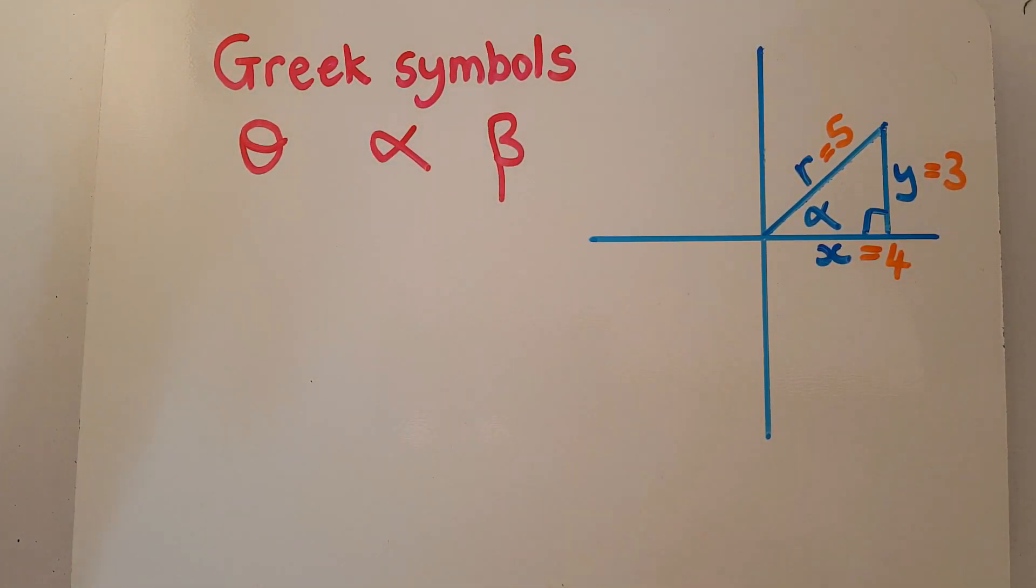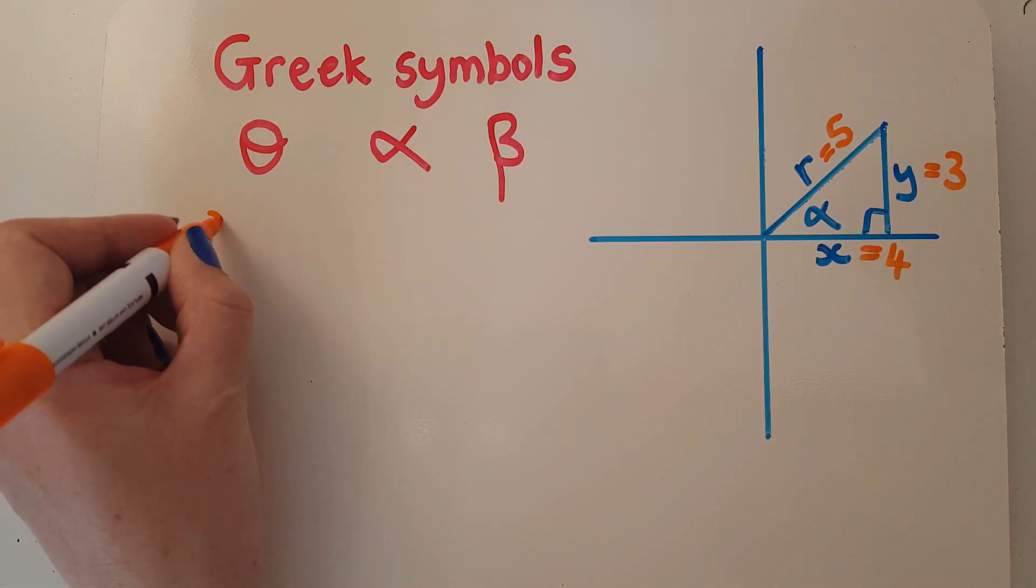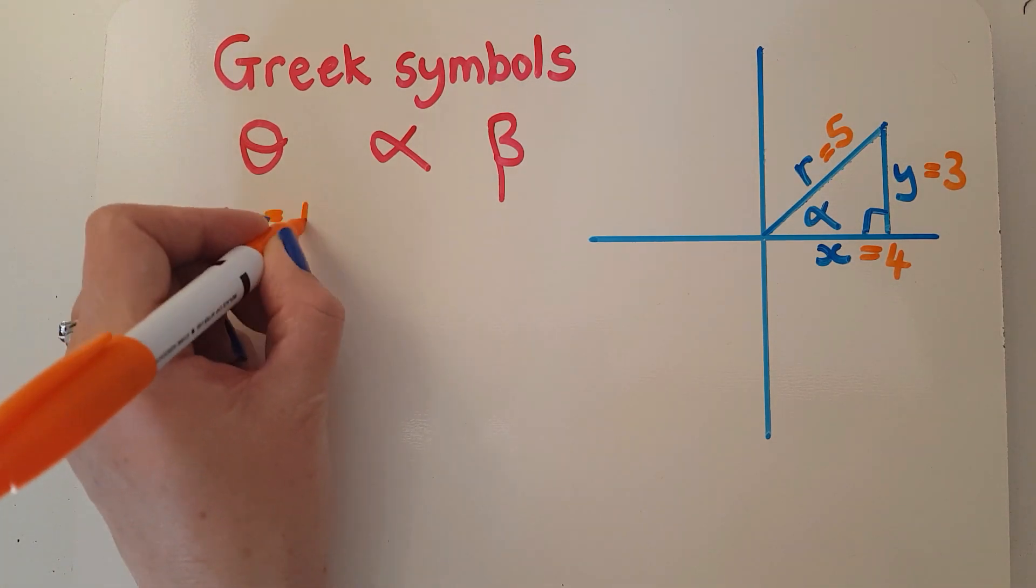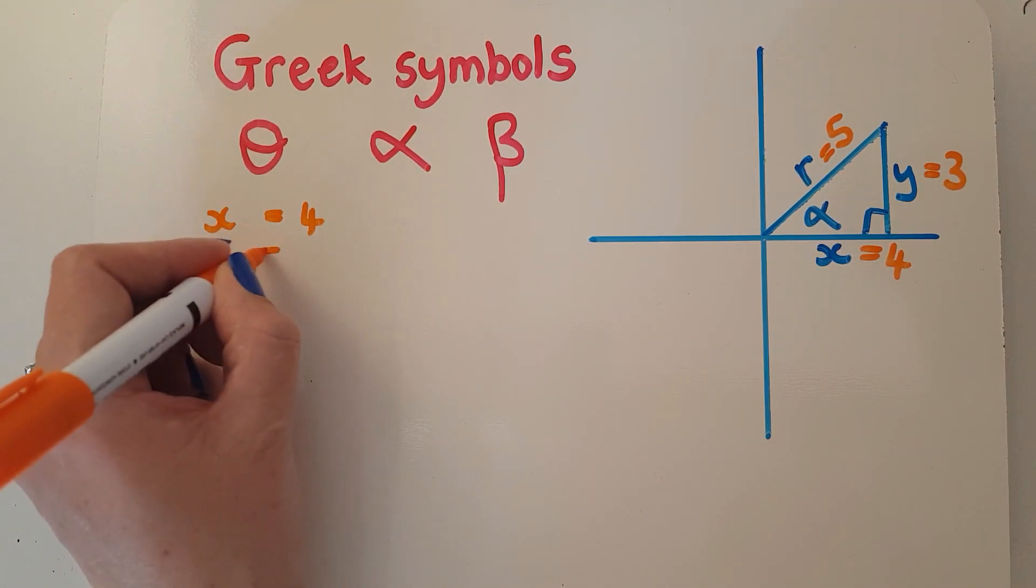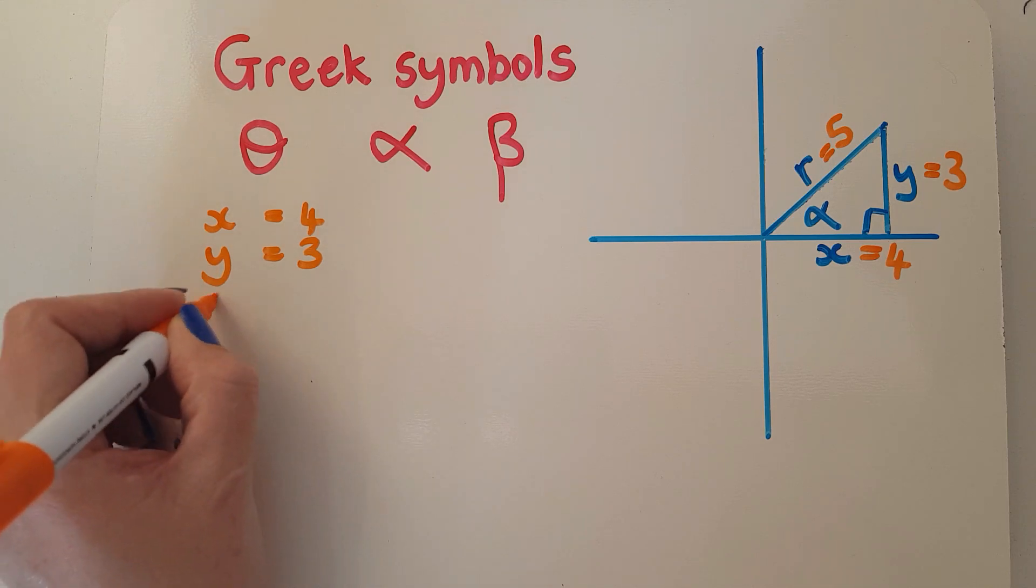If not, then at least you know where to go back and revise. It'll be Pythagoras. So I've got the values: x is 4, y is 3, and r is 5.